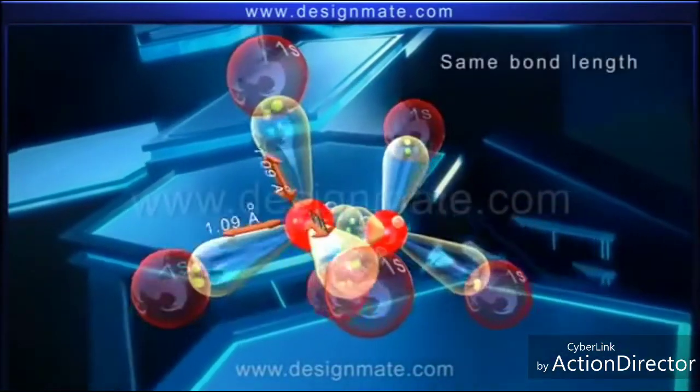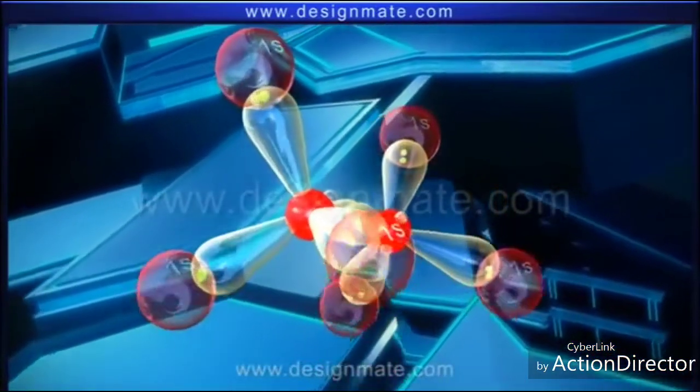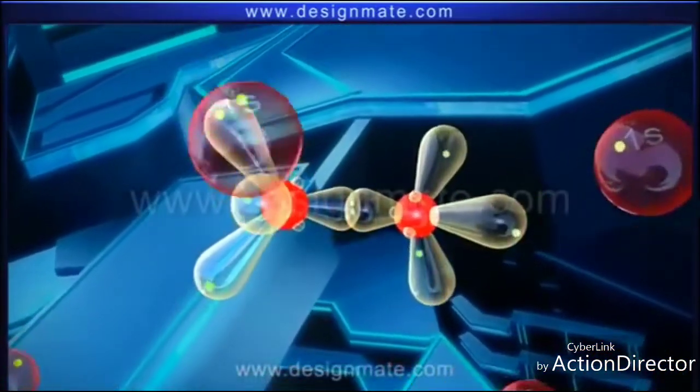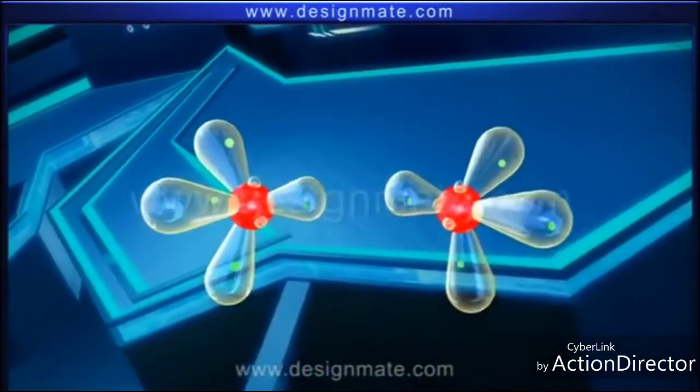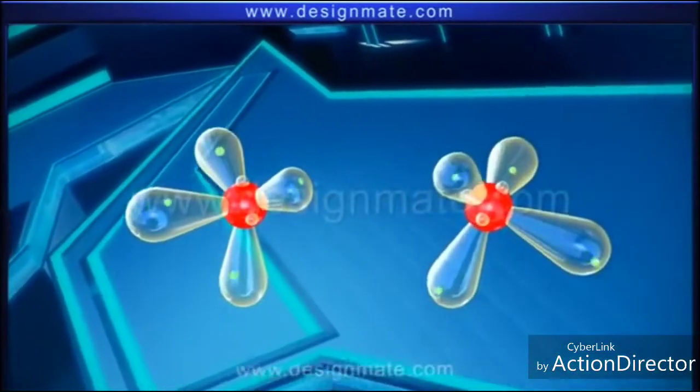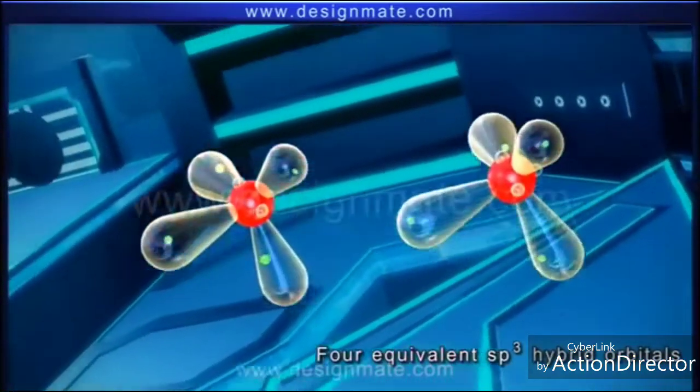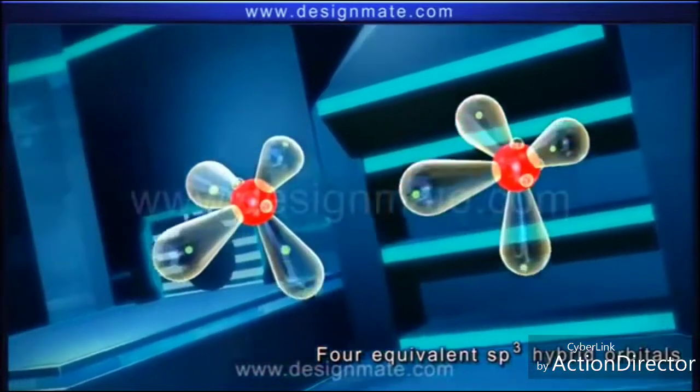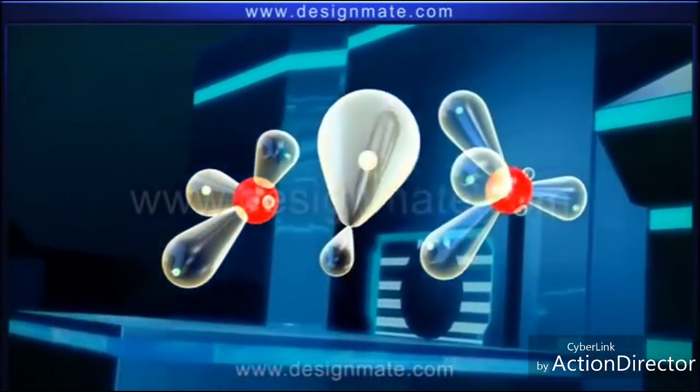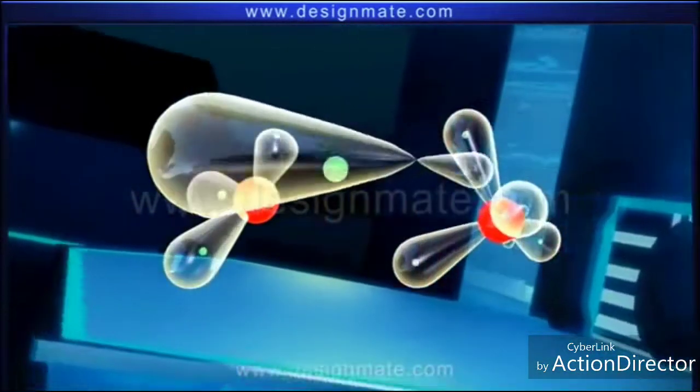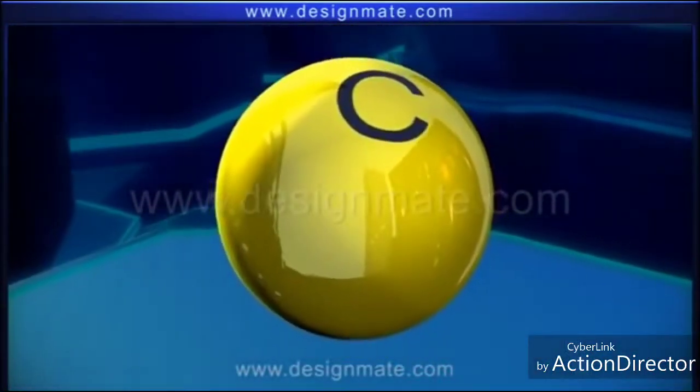These bonds are directed along the corners of a regular tetrahedron, and all carbon-hydrogen bonds are of the same bond length. Let us now remove the six hydrogen atoms from this structure and drag the two carbon atoms apart. We can clearly see four equivalent sp3 hybrid orbitals around each carbon atom. Each of these orbitals has one lobe bigger than the other and is occupied by a single unpaired electron.